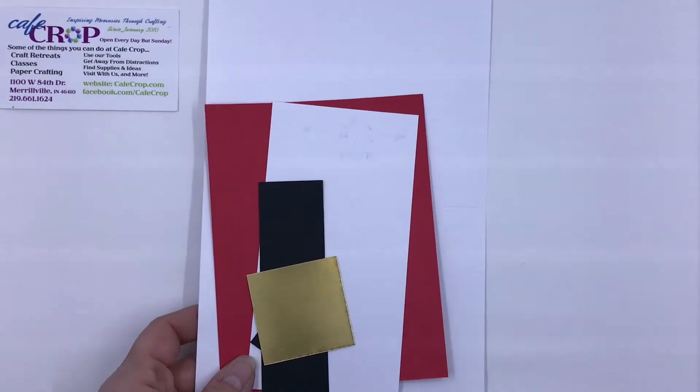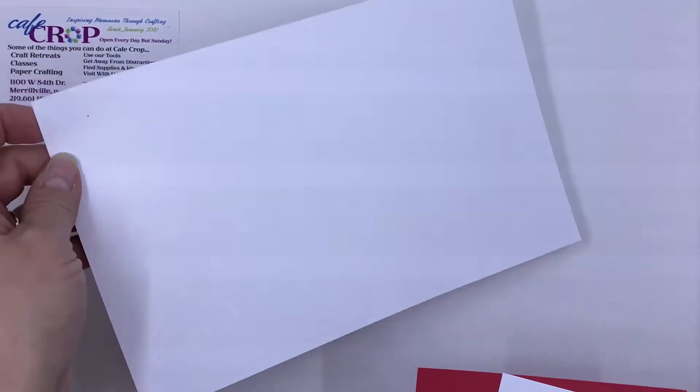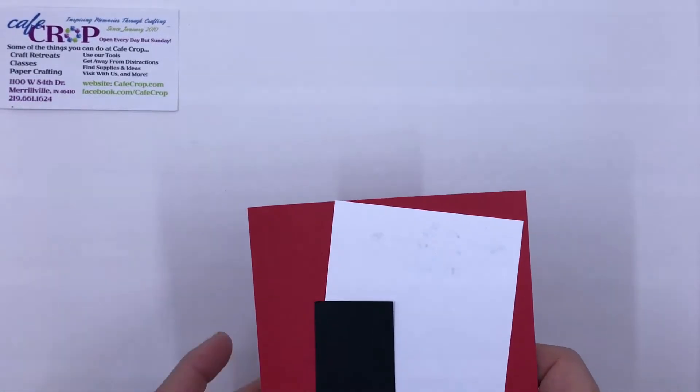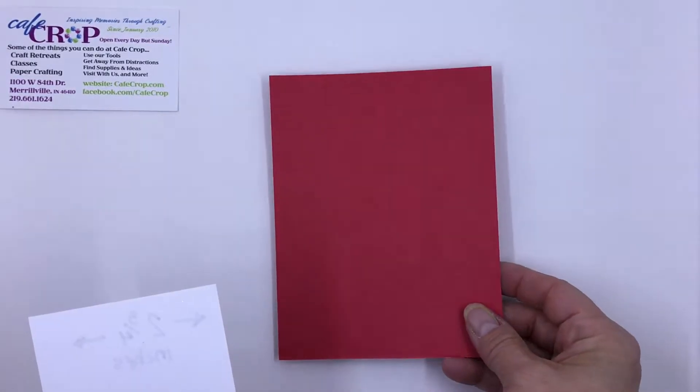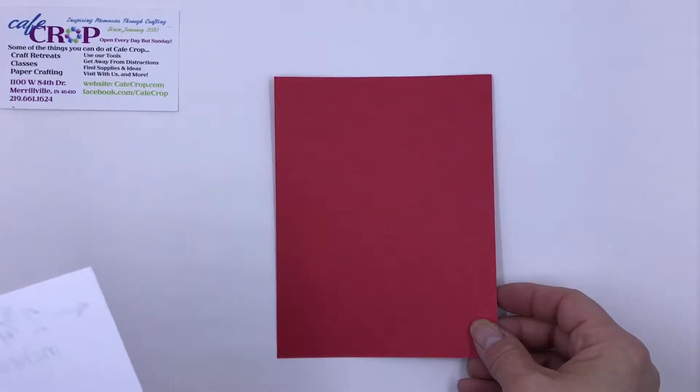Here are the pieces that we'll need. You're going to need your card base, just a standard A2 card base, and then we're going to need one piece of red that's four and a quarter by five and a half. That's going to go on the front of our card.